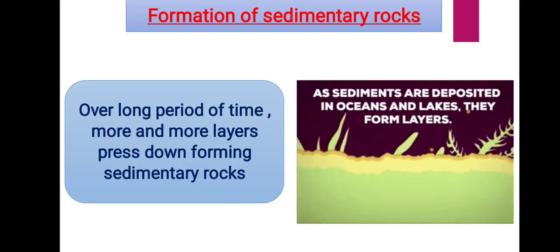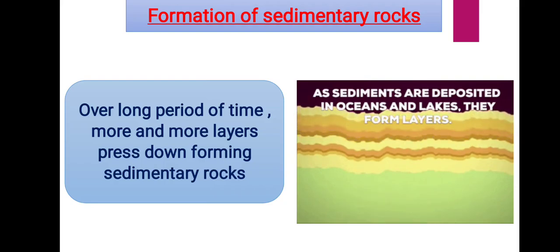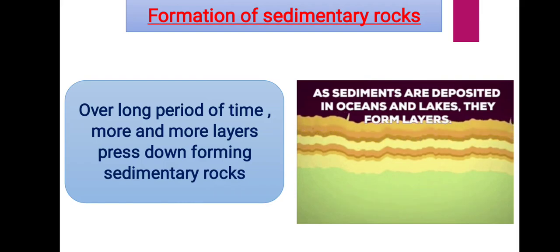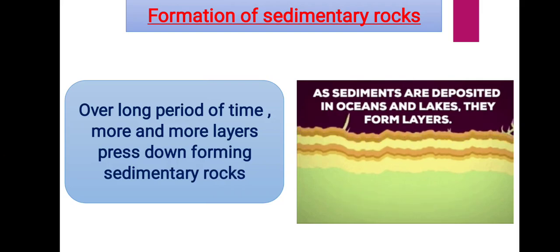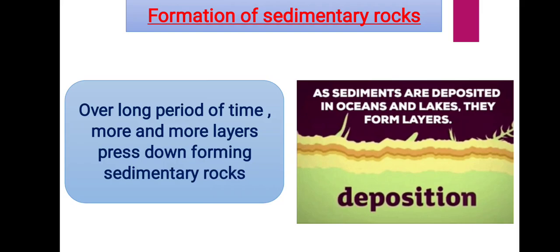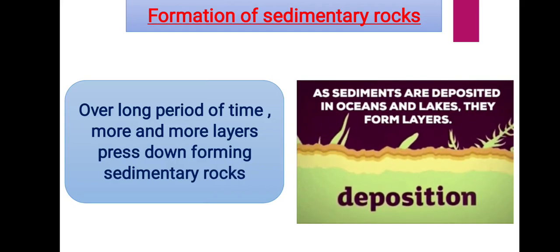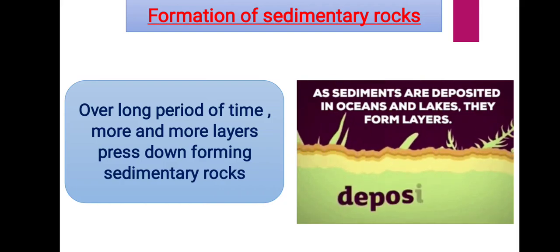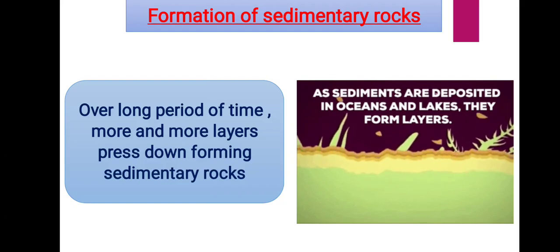The plants and animals will be dead. After many years, these layers of sediment and mud press down to form sedimentary rocks. Another example: if sediment settles on the bottom of the ocean, there are many plants and animals there. The sediment mixes with mud and forms many layers above them, and after many years those layers press down to form sedimentary rocks.